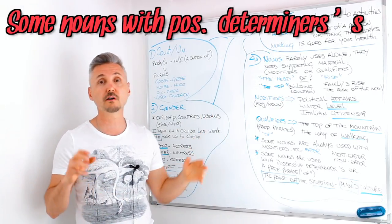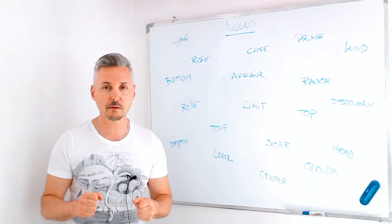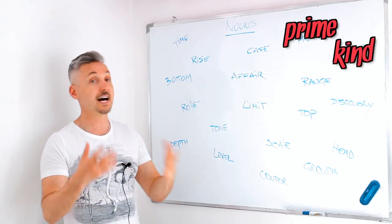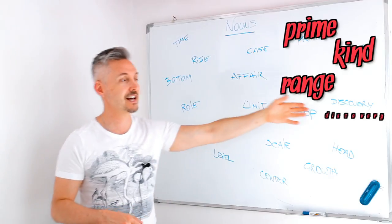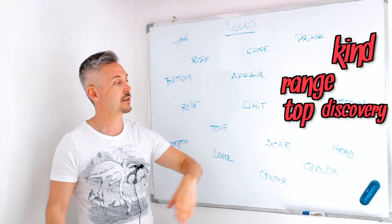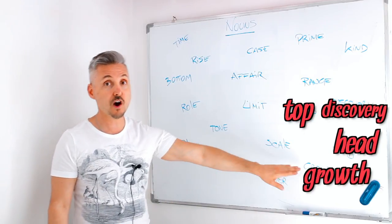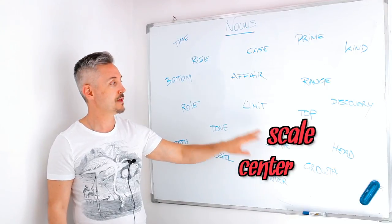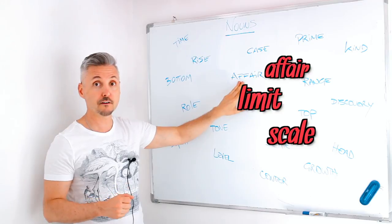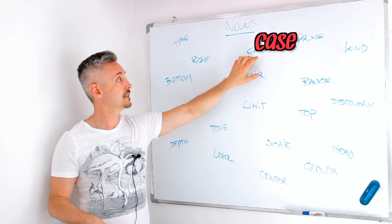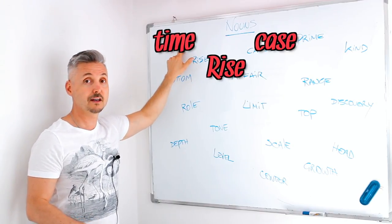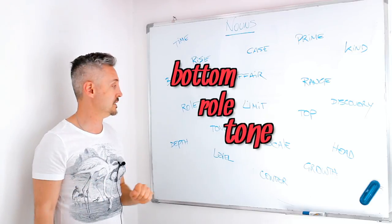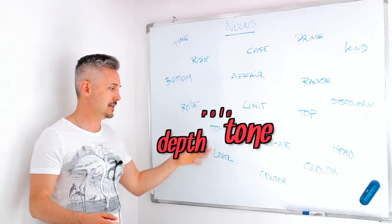Here are some nouns that need supporting material — a modifier or a qualifier: prime, kind, range, discovery, top (the top of the mountain), head (the head of the office), growth (population growth), center (the city center), scale, limit (the speed limit), affair (family affair), case, rise, time, bottom (the bottom line), role, tone (ringtone), depth, and level.